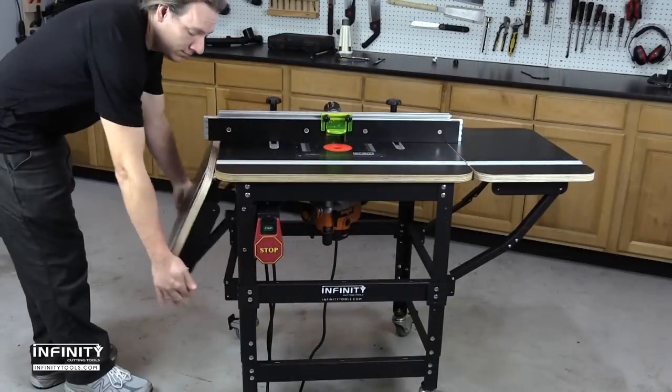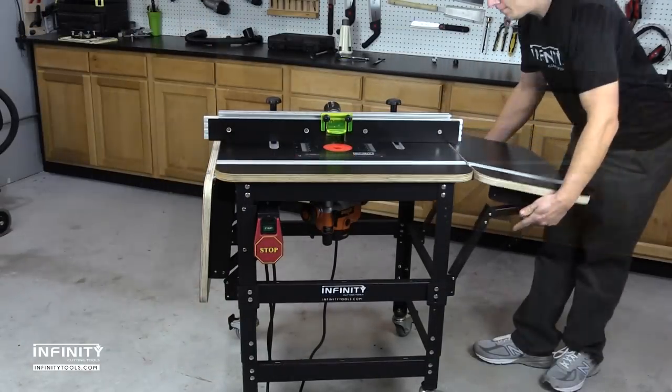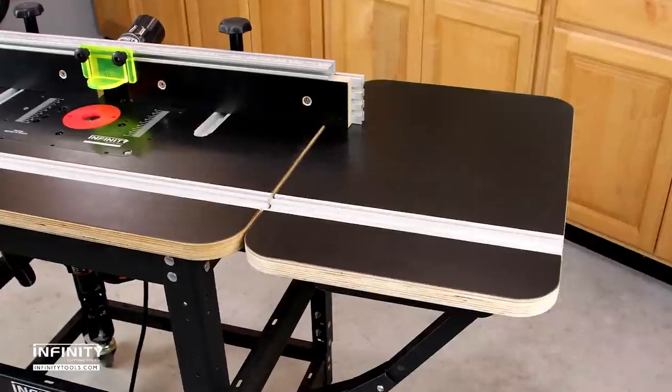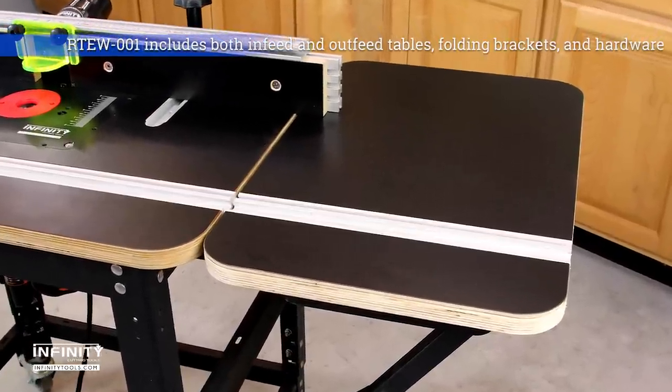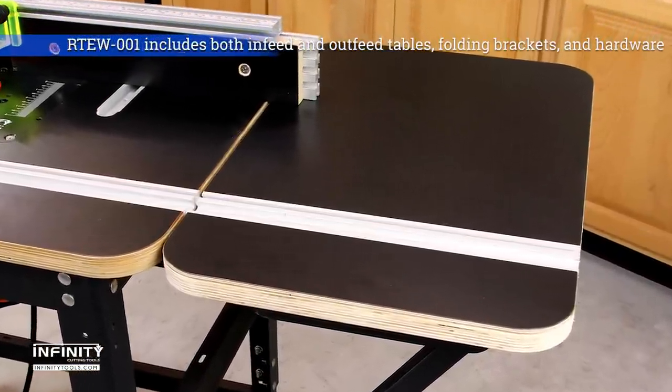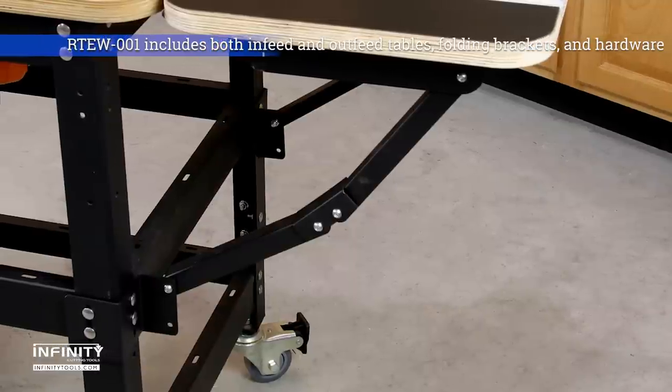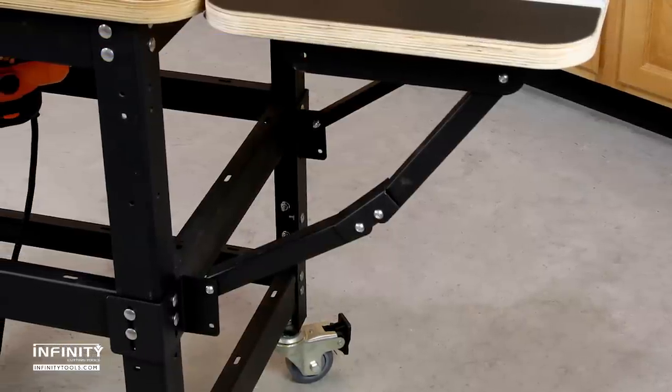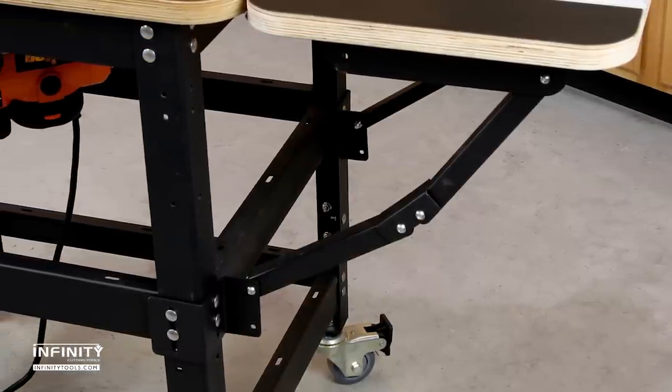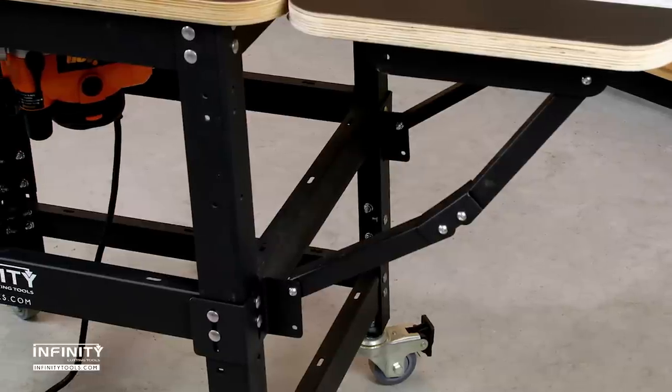When not needed, the wings fold down and out of the way so they don't take up any additional shop space. The tops are made from the same 1-inch thick ply-core material with micro-dot surface as our router table tops, and the unique folding support brackets are made from heavy 2-millimeter thick powder-coated steel and are designed to bolt directly to the Infinity Heavy Duty tool stand.